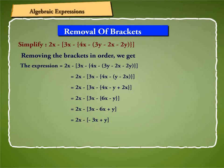In the end, we remove the square brackets. We are left with 2x plus 3x minus y, which gives us 5x minus y.